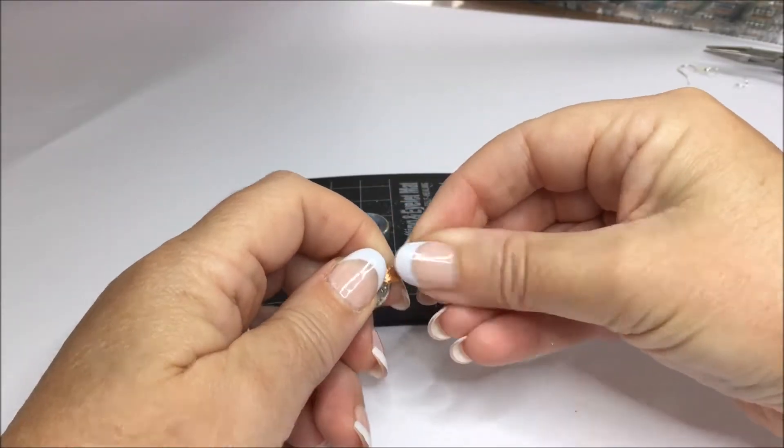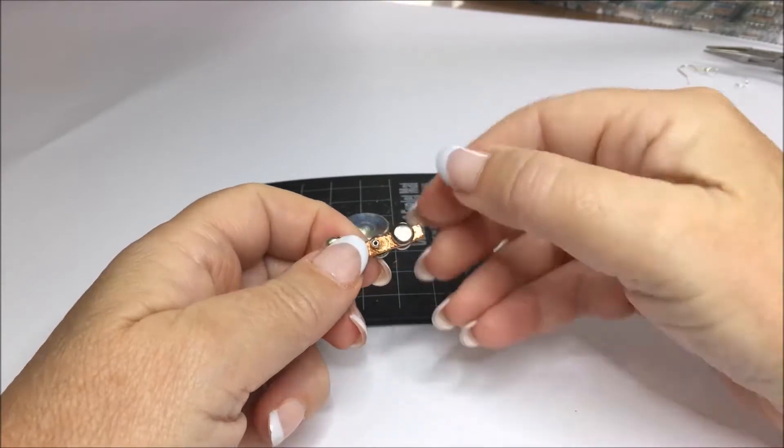Now repeat the process for the second rivet.